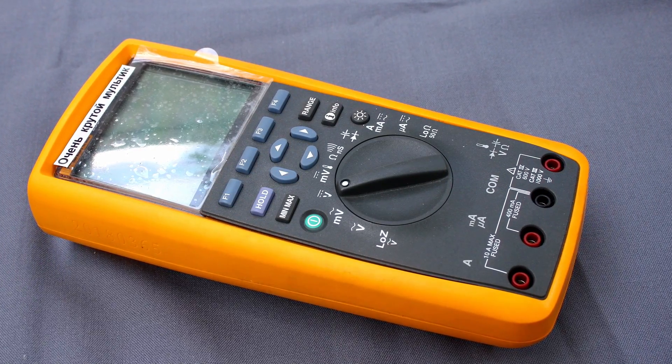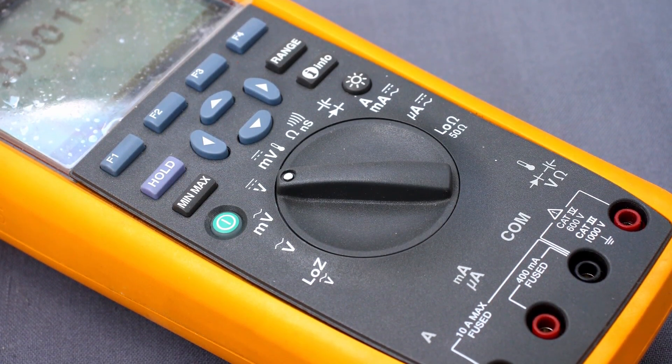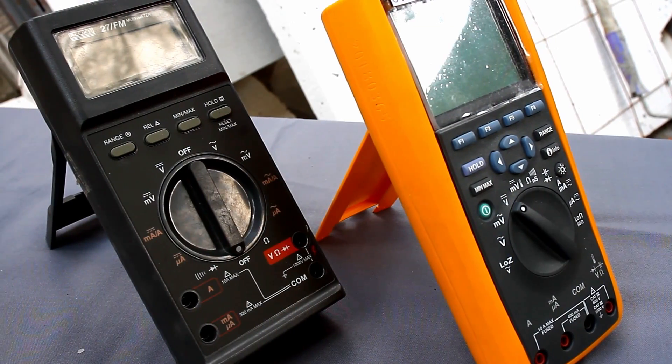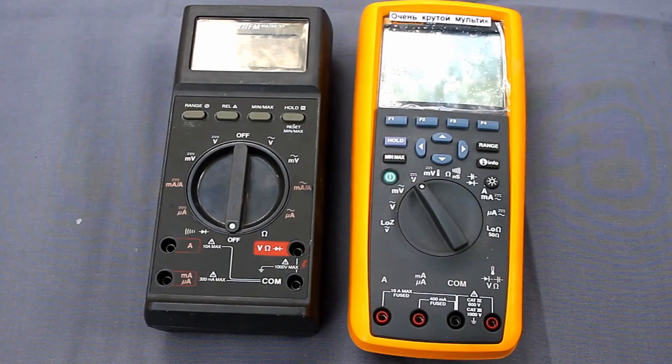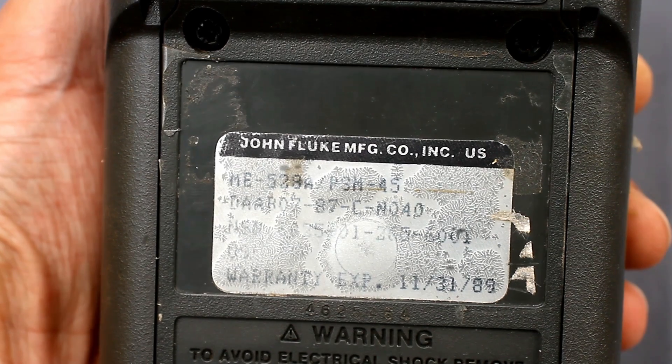And high-precision complex instruments, for example, the Fluke 289, depending on the configuration, can cost from $700 to $1000 and more. But this isn't the most expensive portable Fluke multimeter. And multifunctional Fluke calibrators can cost from $10 to $100 of thousands of dollars.